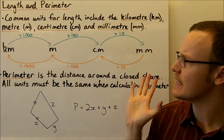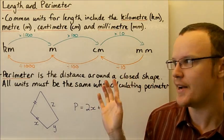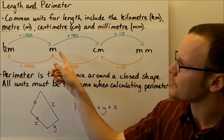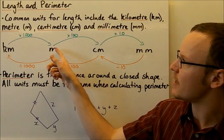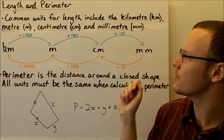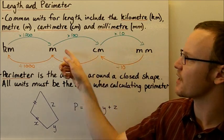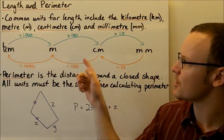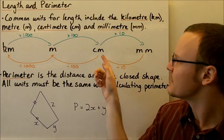Milli is Latin for one-thousandth. So if we multiply by ten and then multiply by a hundred, that's multiplying by a thousand to go from metres to millimetres. So millimetre means one-thousandth of a metre.